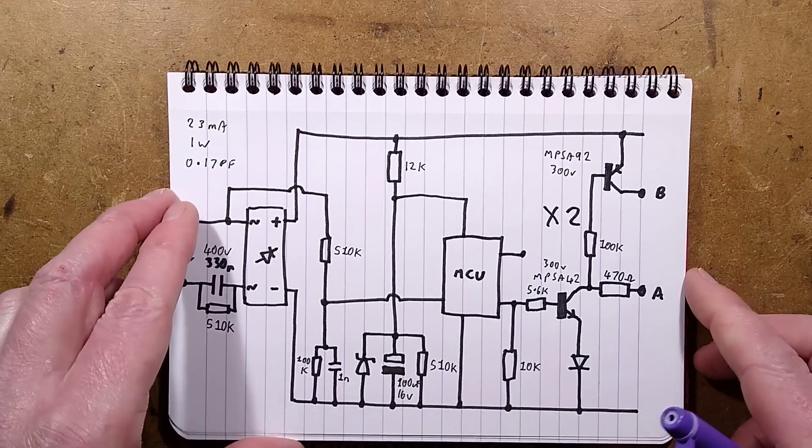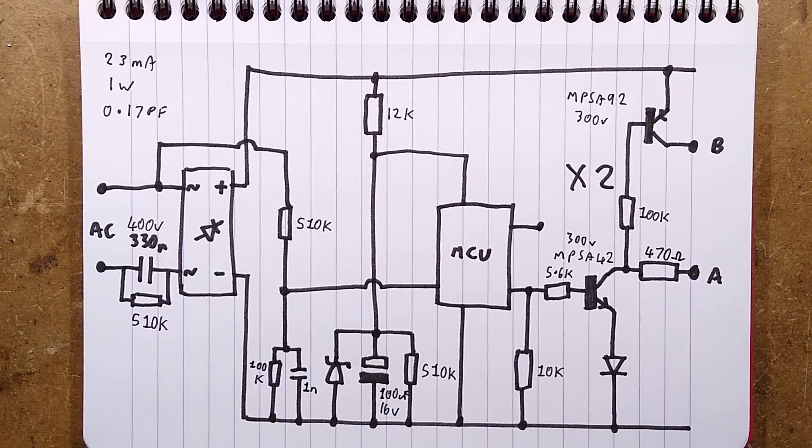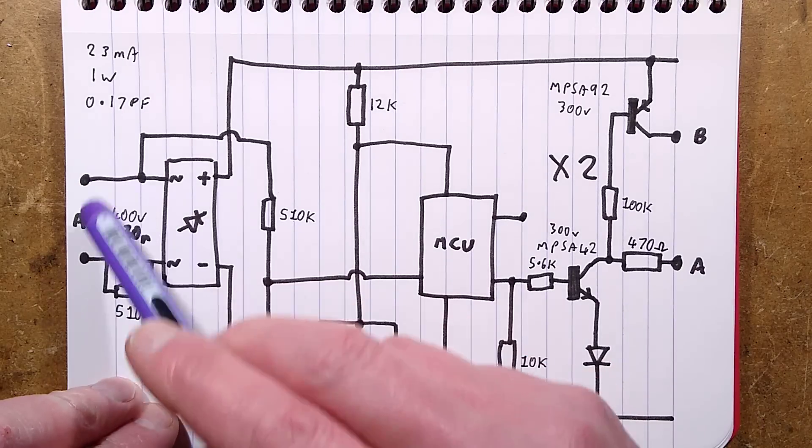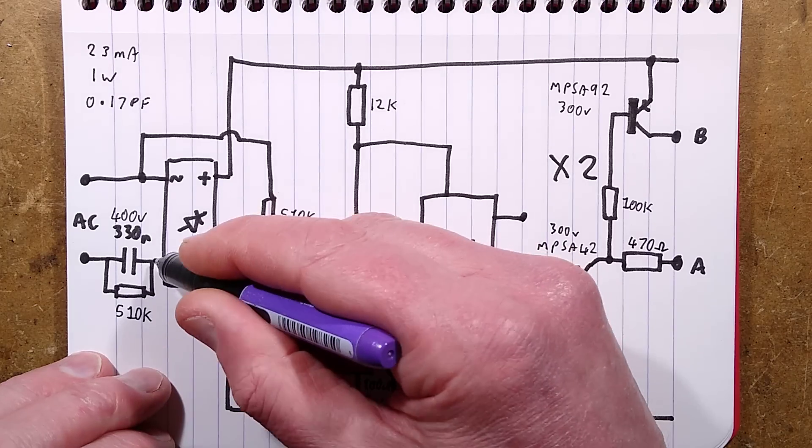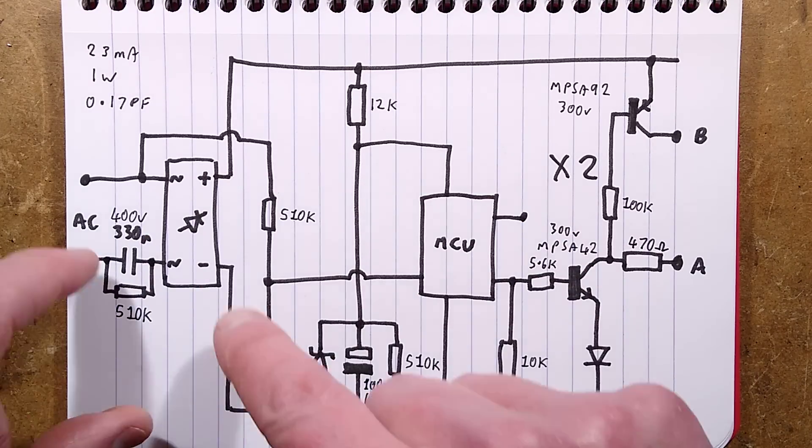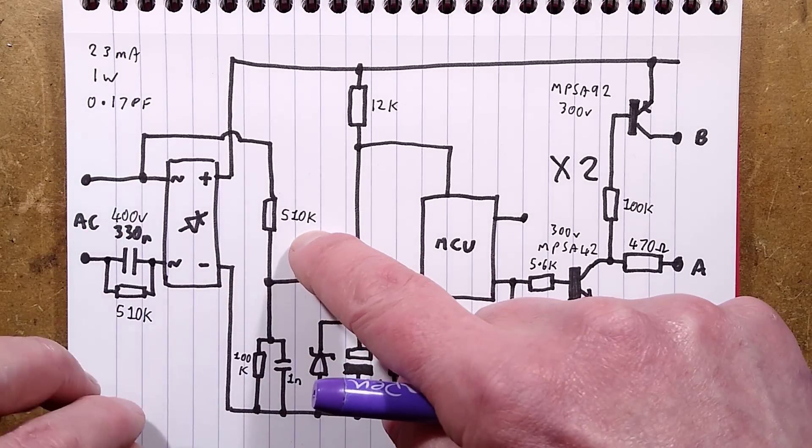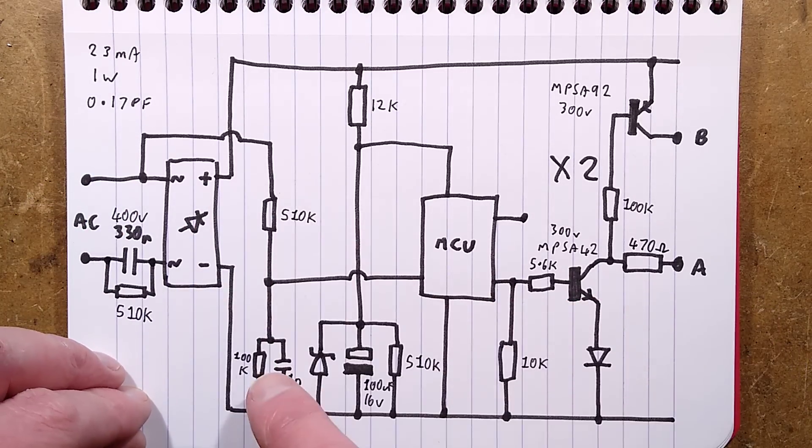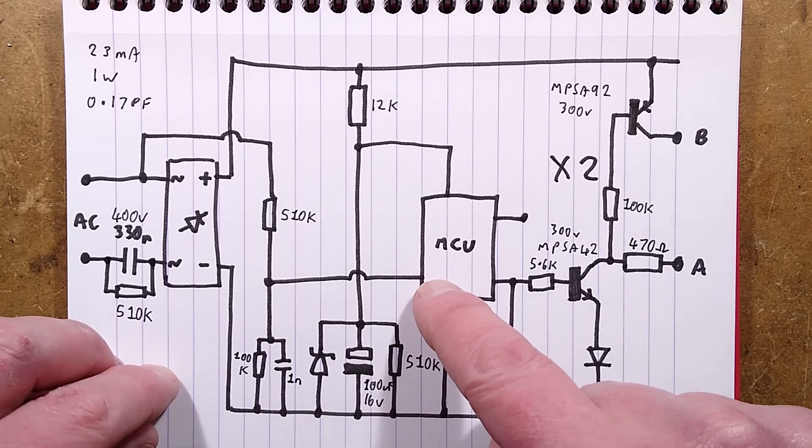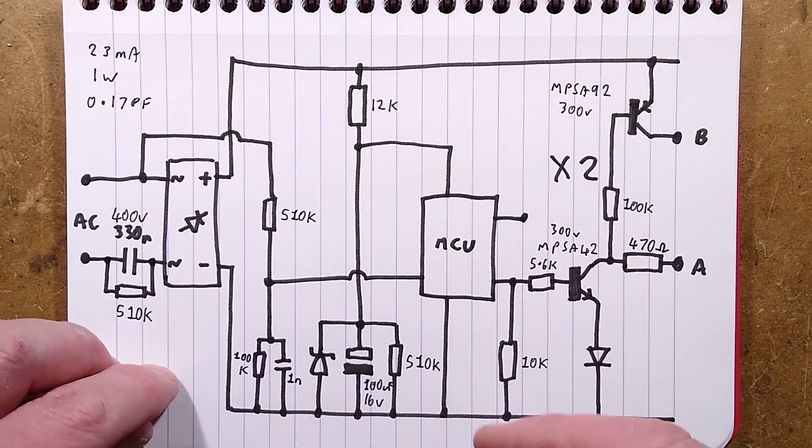And here is the schematic, it's fairly logical. And it gets rectified, but a tap is taken off with this 510K resistor going down to a divider 100K and a 1 nano and that will actually be clamped by the microcontroller via its little input protection diode. It's a fairly common way of getting zero crossing point detection. I used to use that as well.